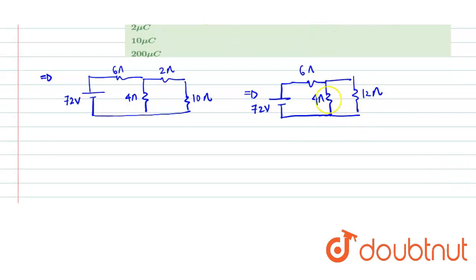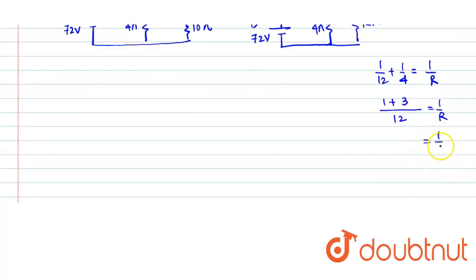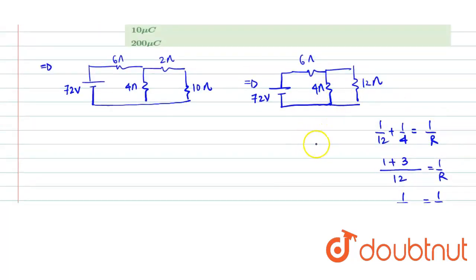Further, we can see 12 and 4 are in parallel, so its equivalent would be 1 by 12 plus 1 by 4 is equal to 1 by R equivalent. So that will become 4 by 12, which is 1 by 3, so equivalent resistance is 3 ohm. So we can replace 12 ohm and 4 ohm with 3 ohm, and then we have this 6 ohm resistance connected with a battery of 72 volts.